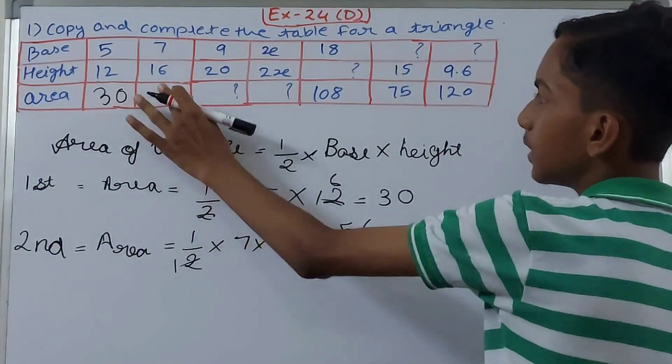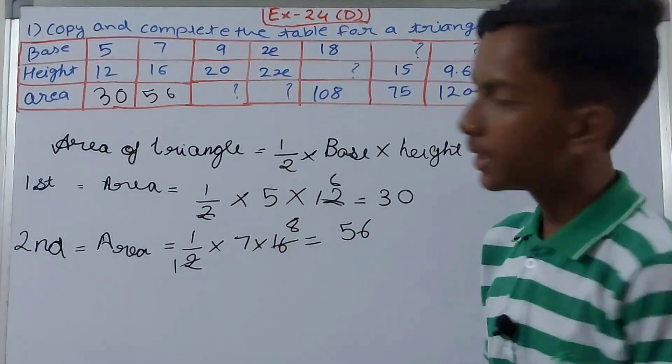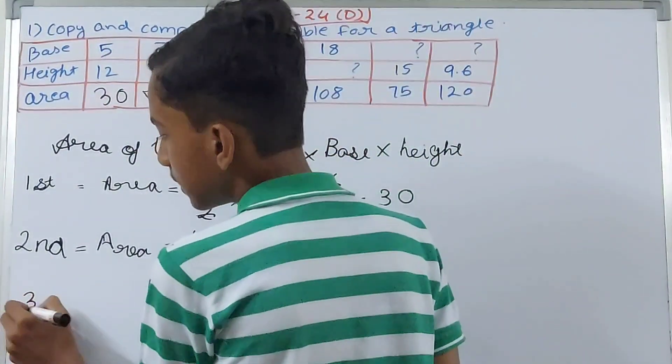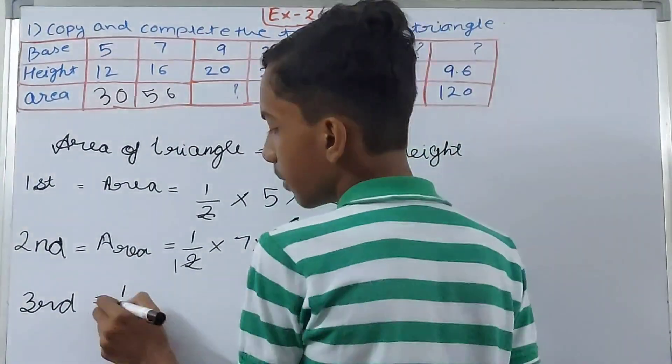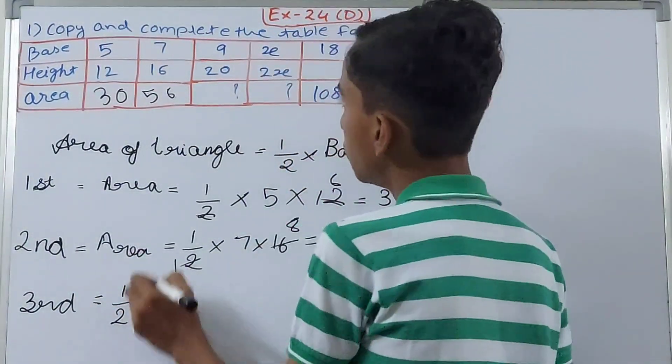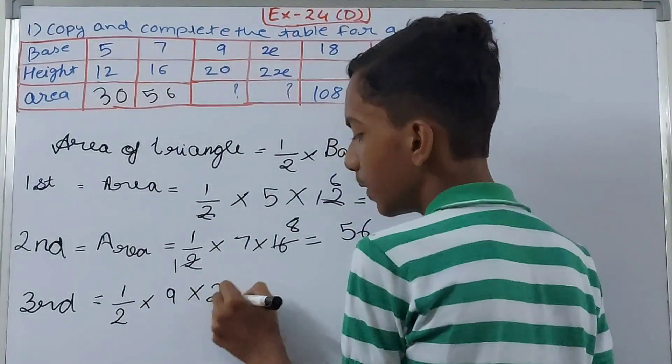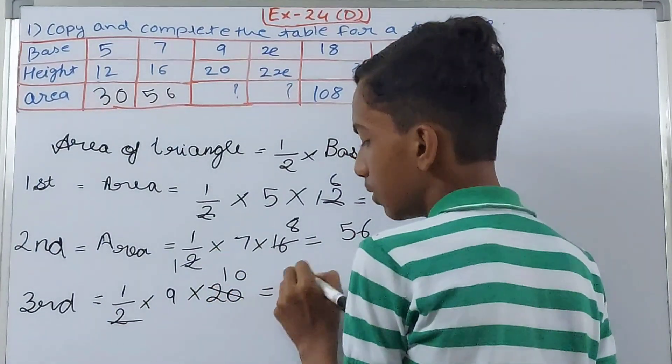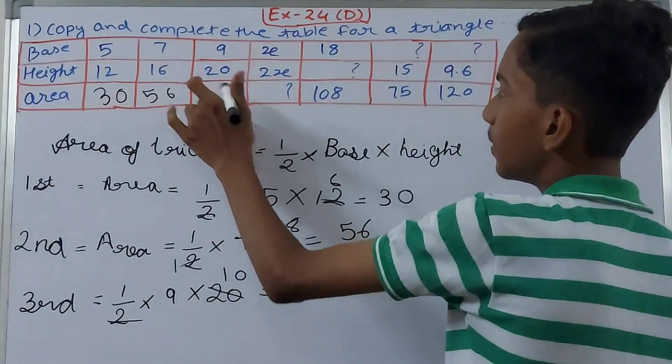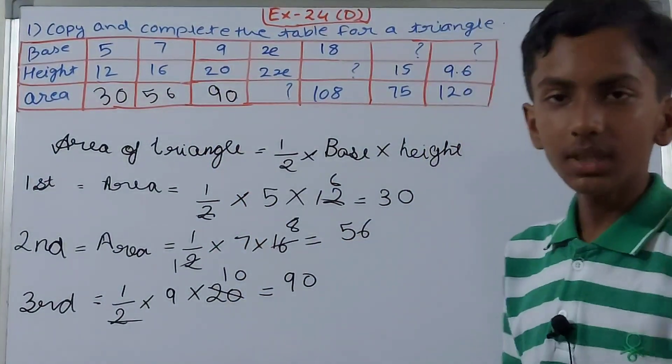Then the third one, same thing. Area equals 1/2 into base 9 into height 20. Cancel this, so 90. Here it becomes 90.